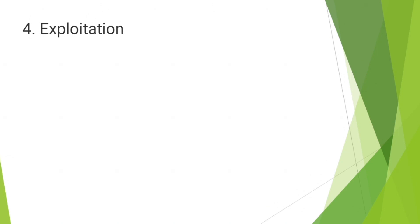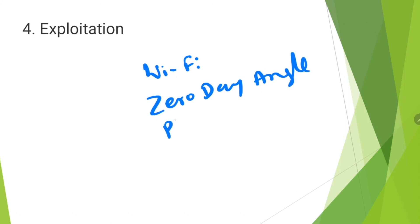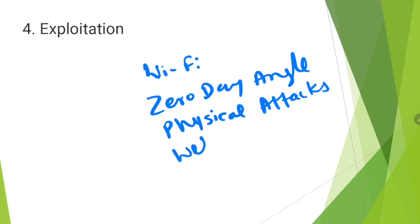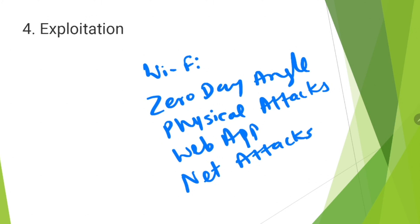Different exploit techniques are used during this phase — for example, Wi-Fi attacks, zero-day exploits, physical attacks, web application attacks, and network attacks. The pen tester will review and document how vulnerabilities are exploited and explain the techniques and tactics used to obtain access to the targets, providing clarity on what results were achieved from the exploits.